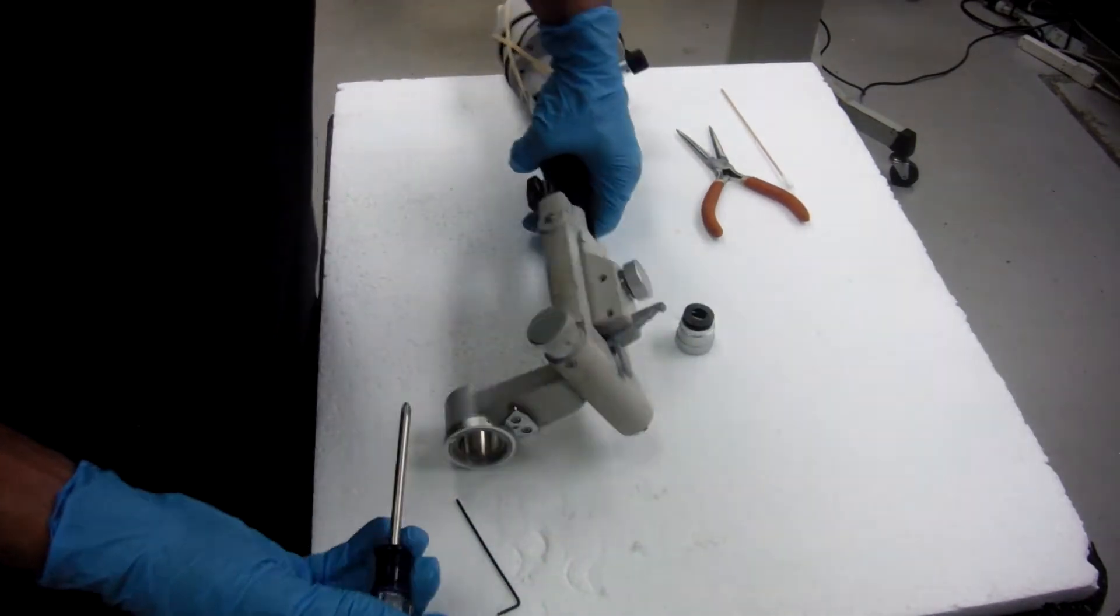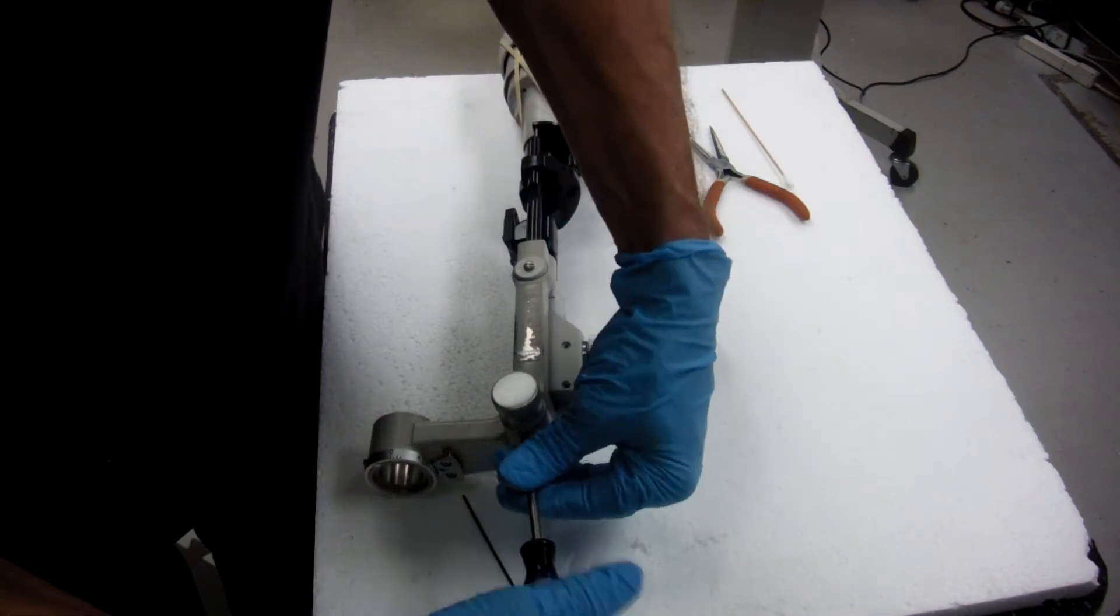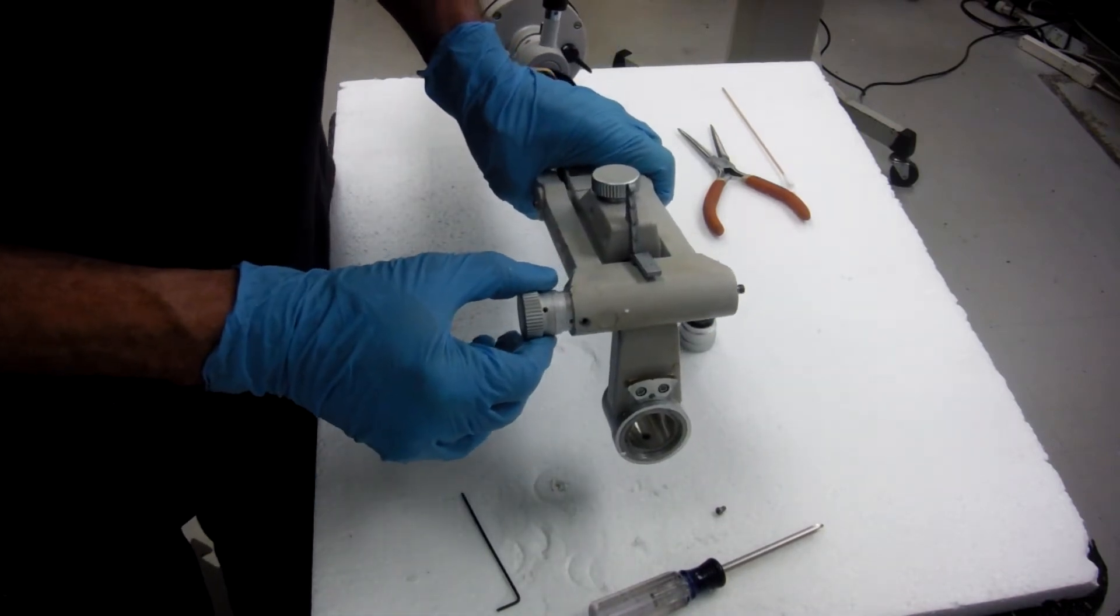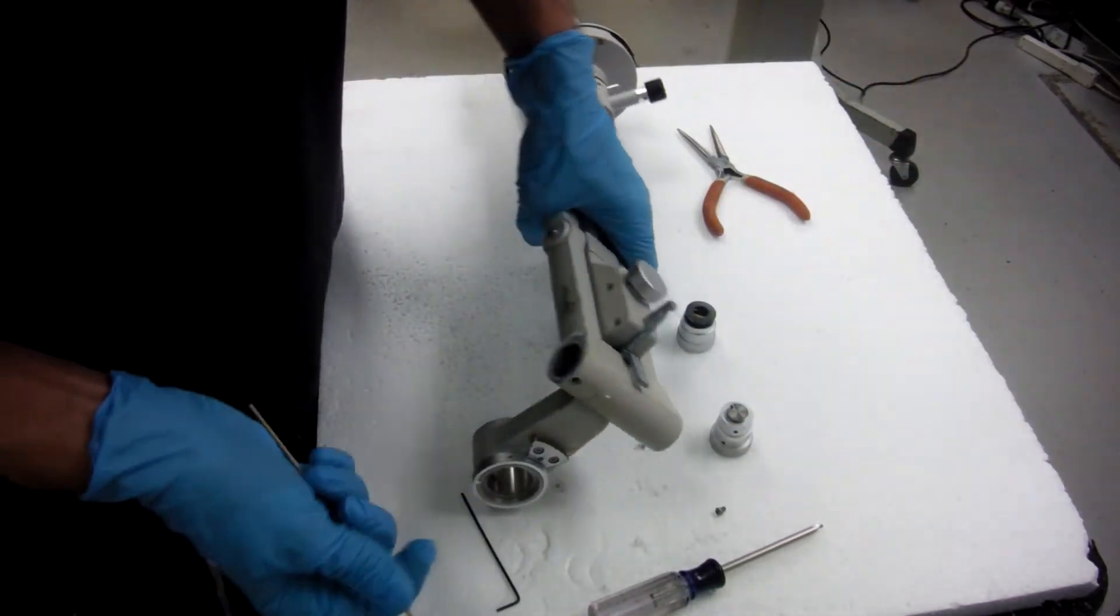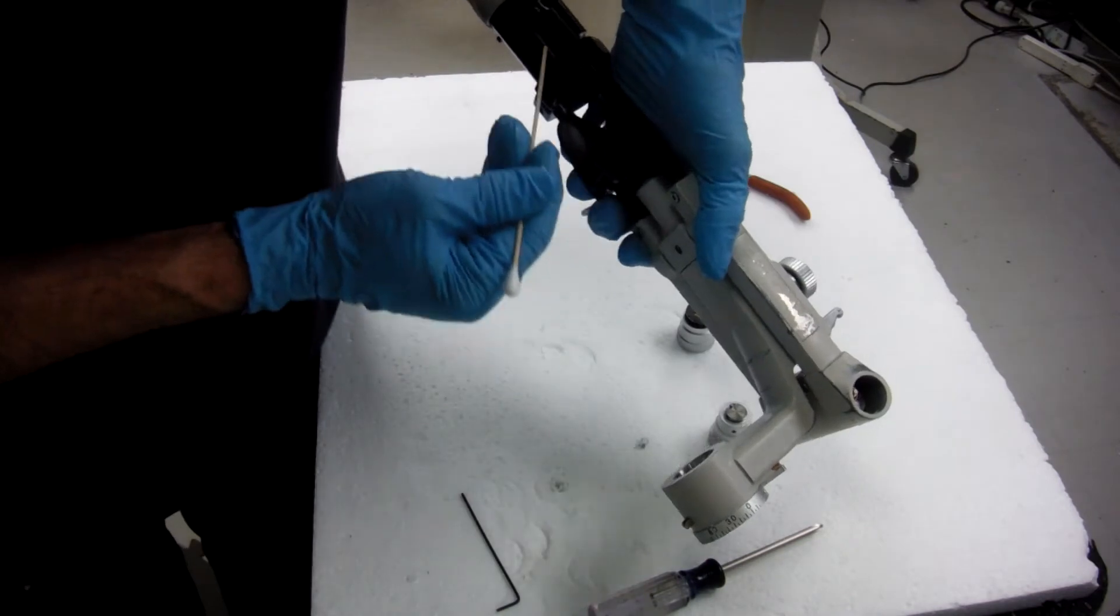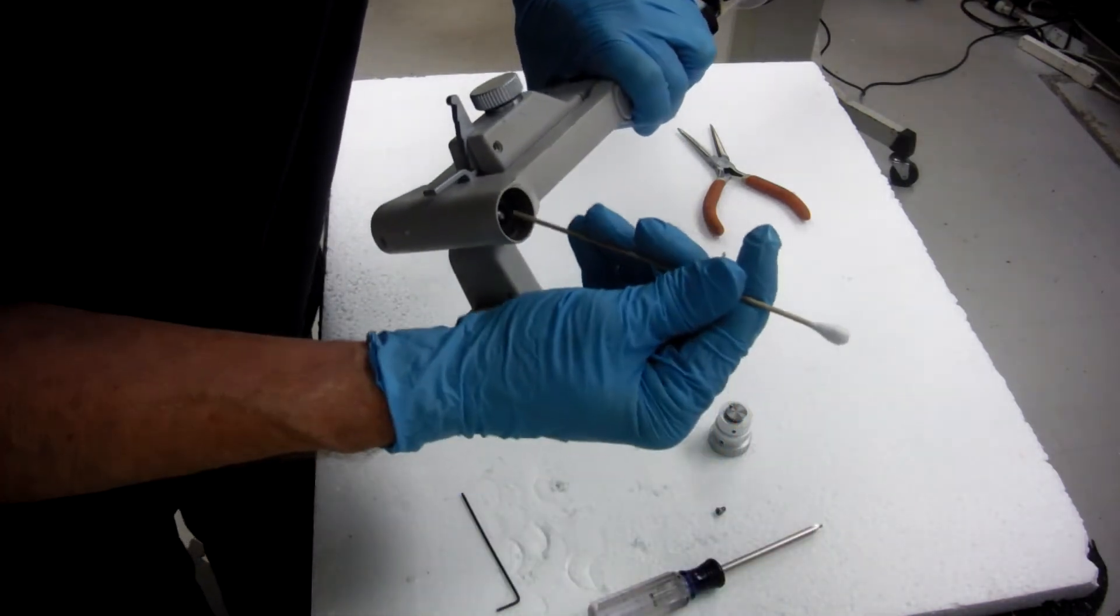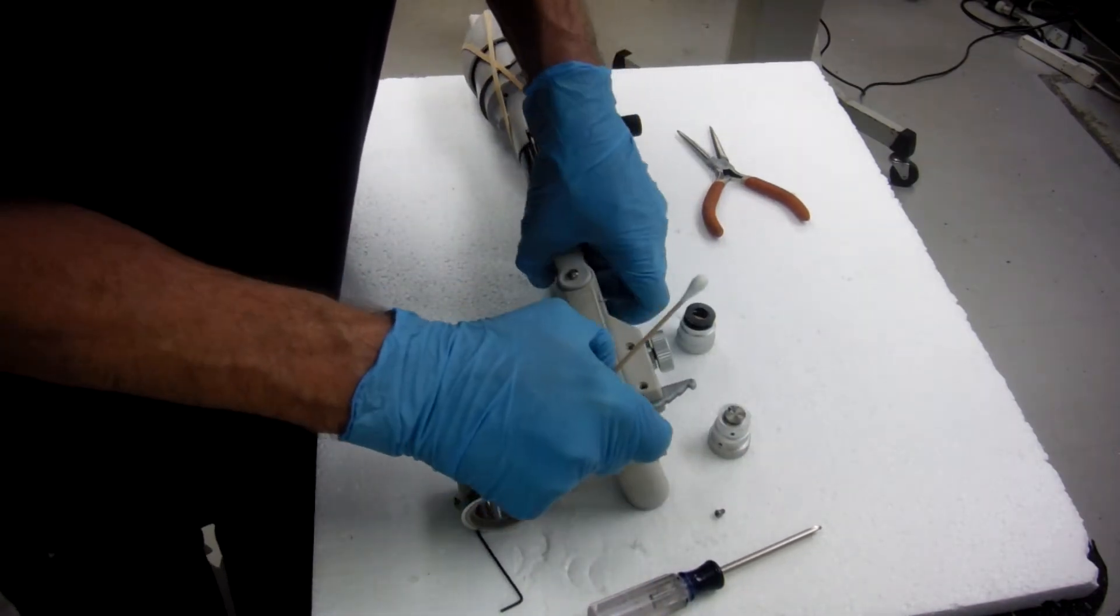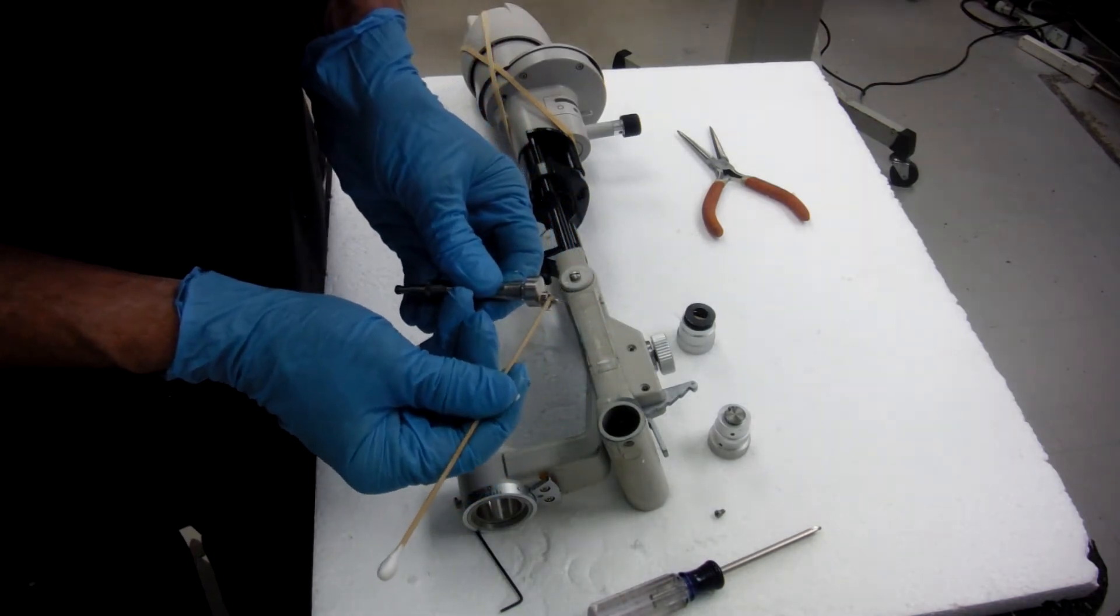Now we're going to take this screw out. I'm going to pull this out. This is the inside. This is pushing the rod up, which is pushing the table. I'm just going to push this through. You don't want to lose your bearing and you have little spacers on each side. Don't lose those.